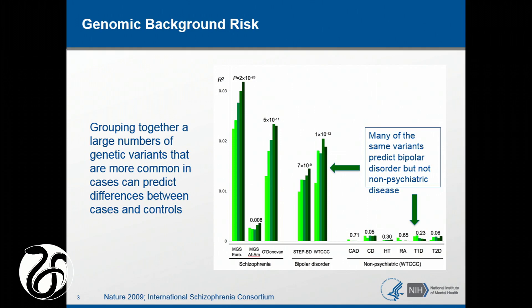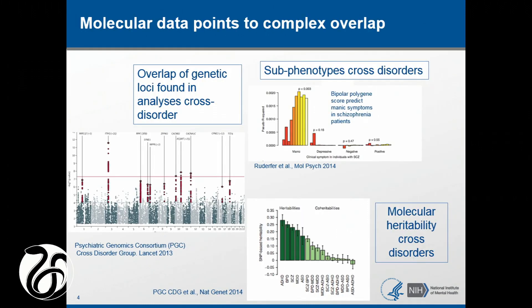When one dissects this further, you can actually show that if you pull this out into deciles, the more of those markers you have, the higher one's risk is for a particular disease. This has been shown beautifully for schizophrenia. The sample sizes for bipolar are lower, so it hasn't worked as well yet for bipolar, but it probably will.